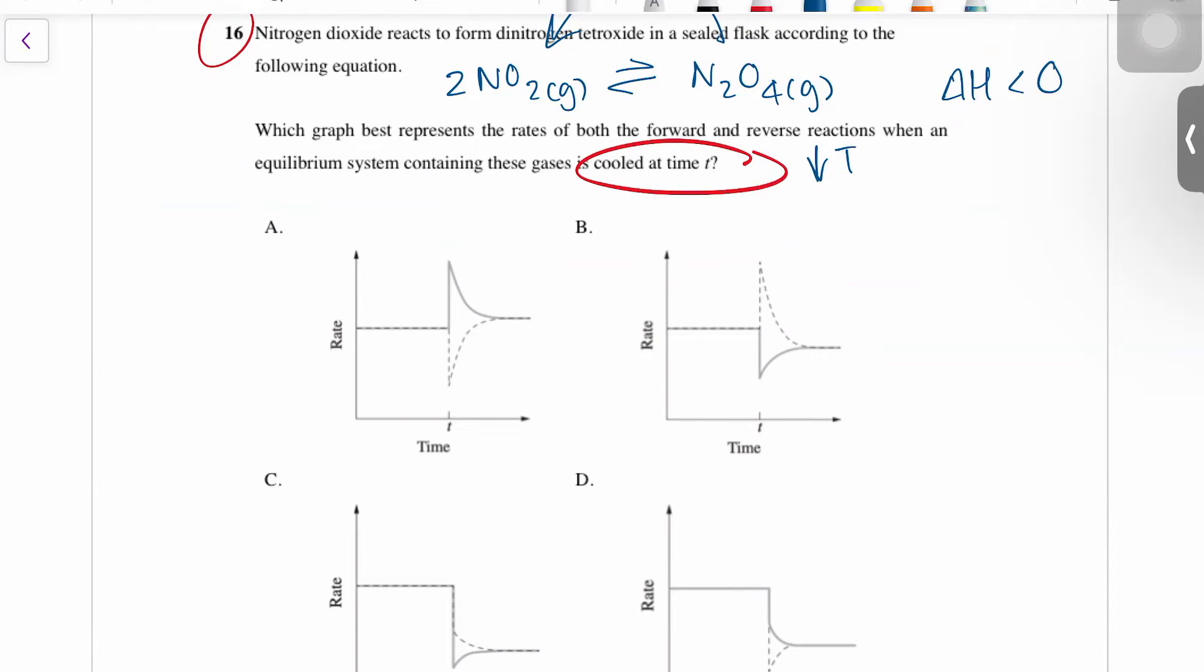And if you're increasing temperature, the reaction rate is going to increase for both the forward and the reverse reactions. So the direction is the same, it's just the magnitude that changes. Like your vector stuff from maths. The direction is the same, it's just the magnitude that changes.